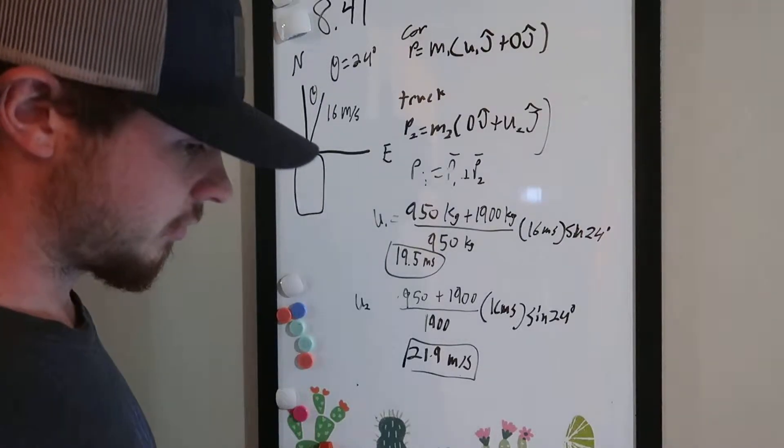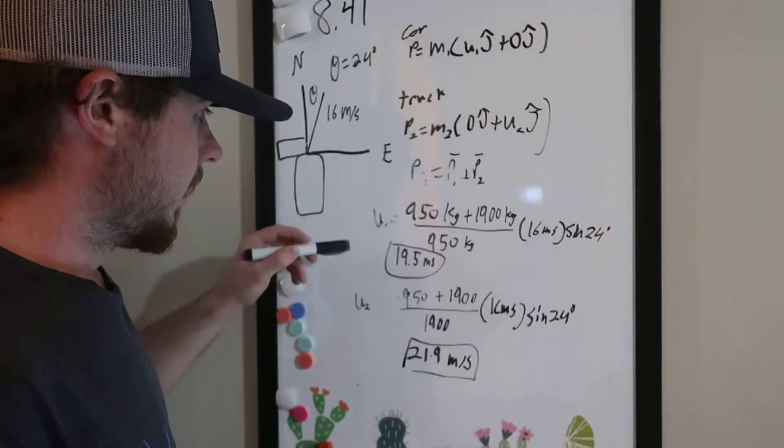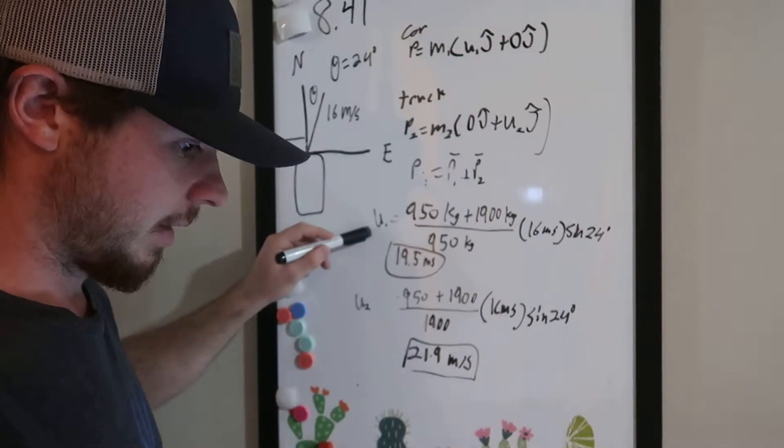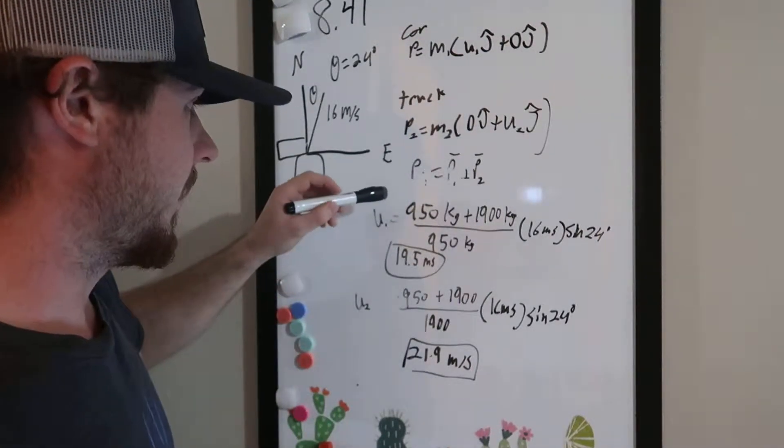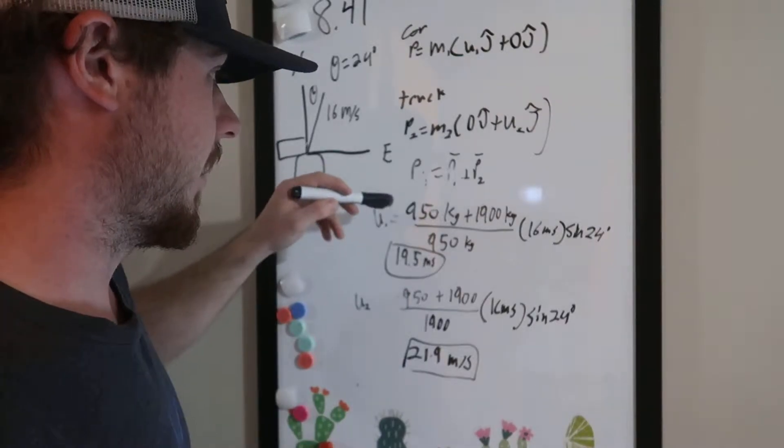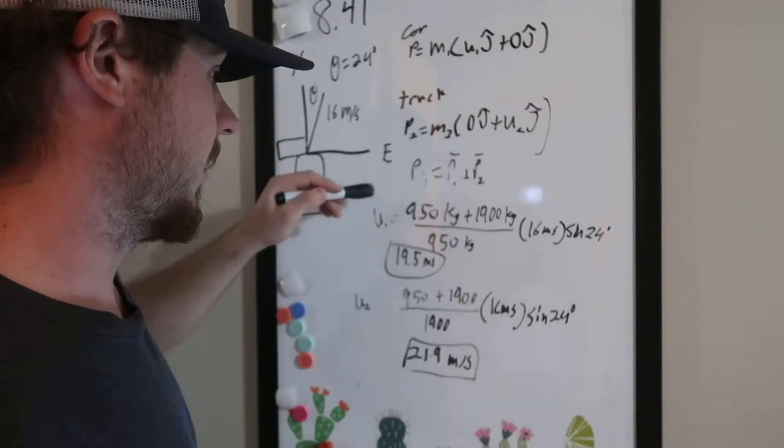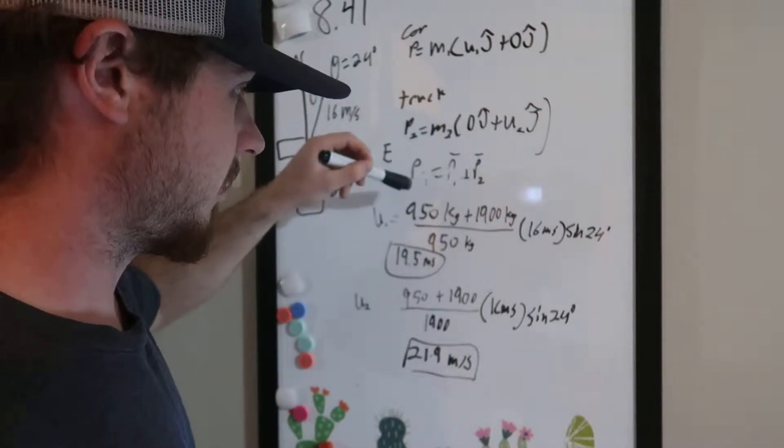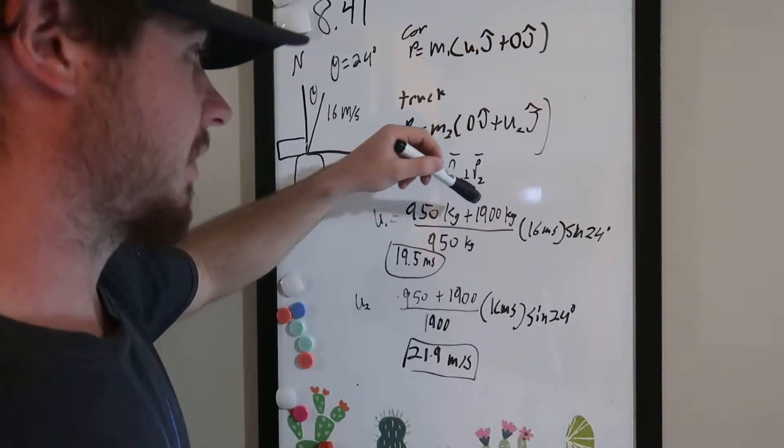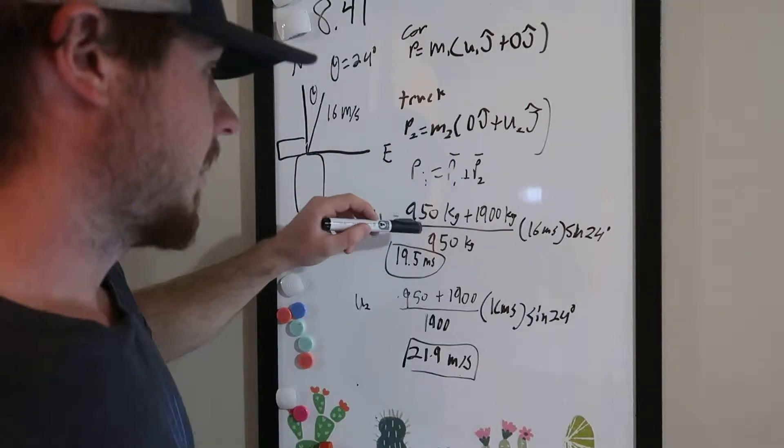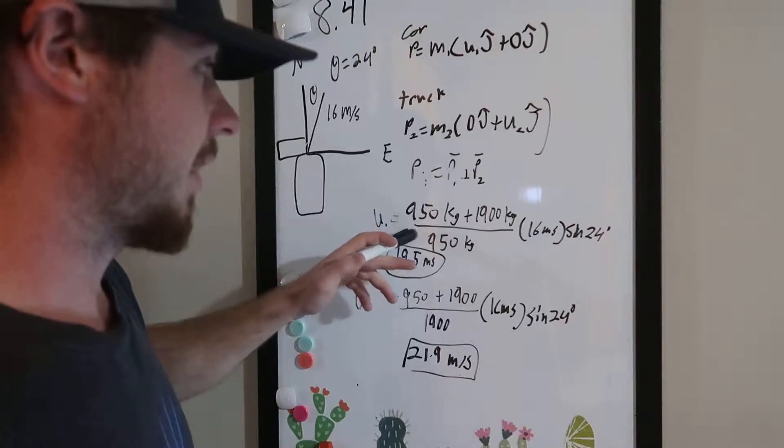So if we rearrange equation 1 in terms of U1, and then we fill in the equation with our information provided, so we get 950 kilograms plus 1,900 kilograms divided by the mass of the car, which is 950 kilograms.